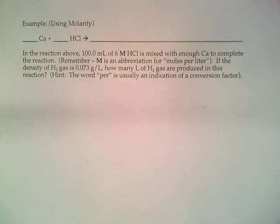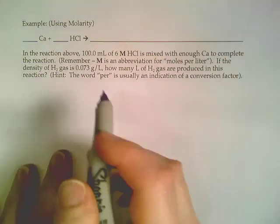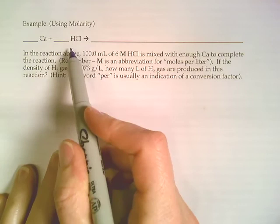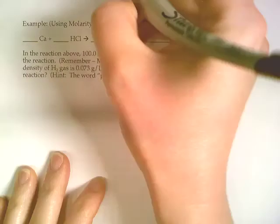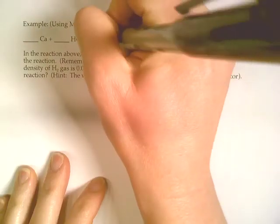Okay, time for our grand finale of stoichiometry examples. For this particular reaction, we've got calcium reacting with hydrochloric acid. That calcium is going to kick the hydrogen out so it can pair up with the chloride ion.